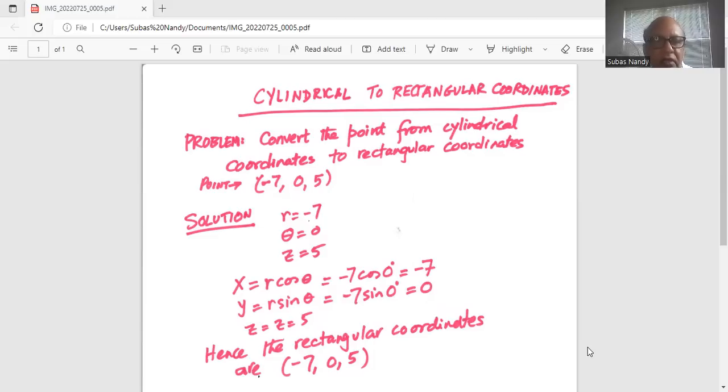y is r sine theta. So which is minus seven sine zero. Now sine zero is zero. So y is zero. And z is z equal to five.